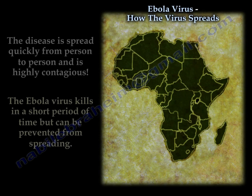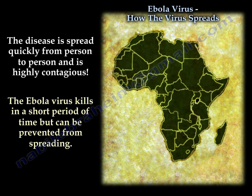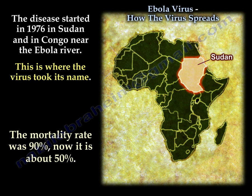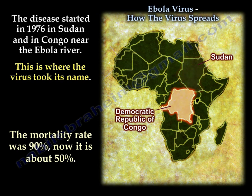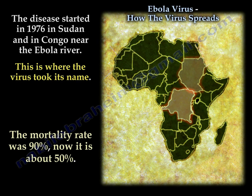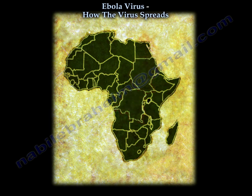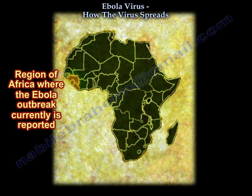The disease spreads quickly from person to person and is highly contagious. The Ebola virus kills in a short period of time but can be prevented from spreading. The disease started in 1976 in Sudan and in Congo near the Ebola River — this is where the virus took its name. The mortality rate was 90 percent; now it is about 50 percent. Here are the countries where Ebola originated and the region of Africa where the Ebola outbreak is currently reported.